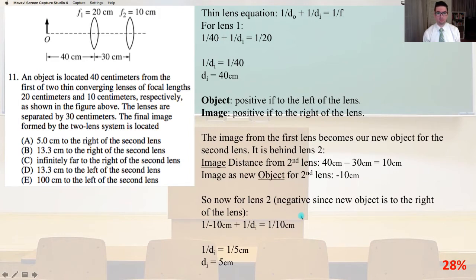For lens 1, 1 over 40 plus 1 over DI equals 1 over 20. 1 over DI therefore equals 1 over 40 and DI equals 40 cm. For the object, it's going to be positive distances if it's to the left of the lens. The image is going to be positive if it's to the right of the lens. It's important to remember.